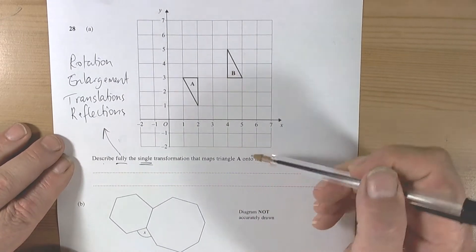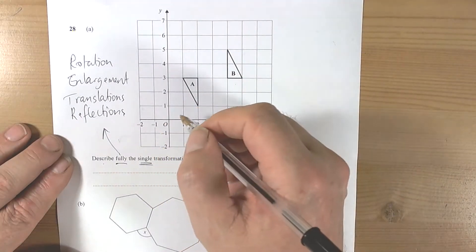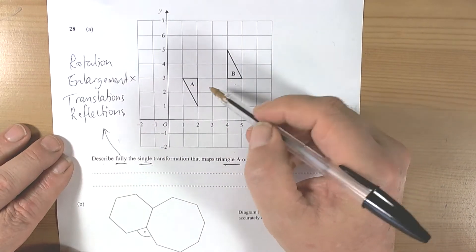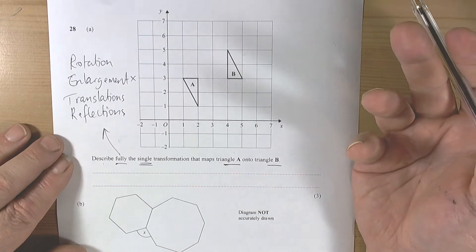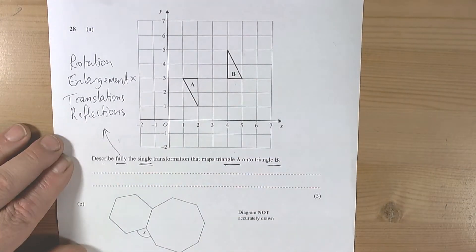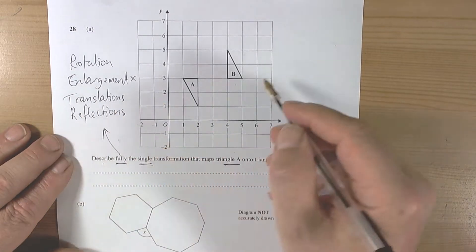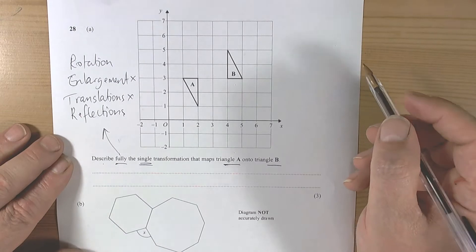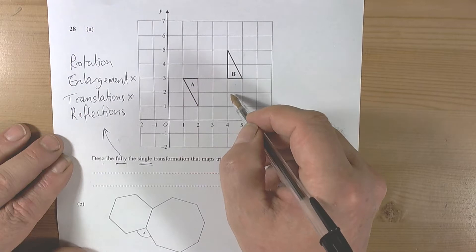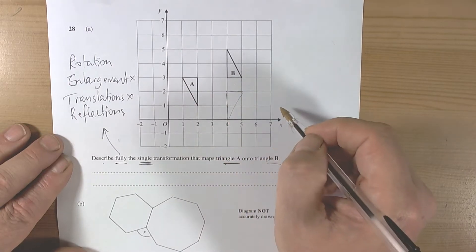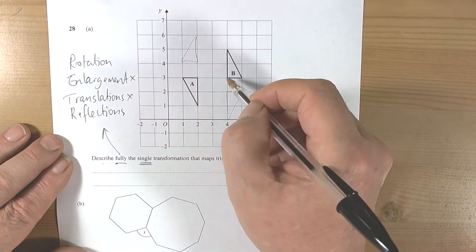We think how has A become B. It's obviously not an enlargement because the shape hasn't got bigger or smaller, although an enlargement of scale factor one could mean they're the same size, but that usually isn't asked at GCSE level. Translation means they're going to face the same direction, so it can't be a translation. A reflection would technically go like that or like that, so it's not going to be a reflection.